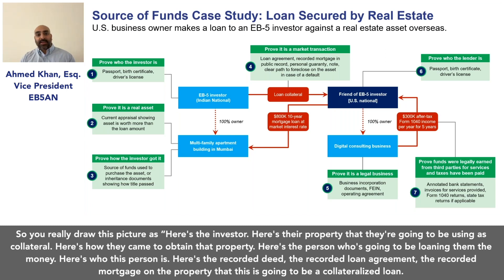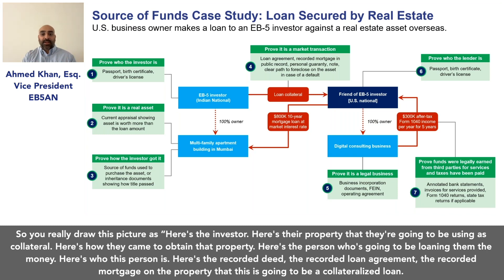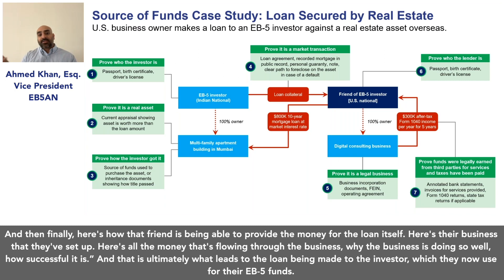You draw the full picture: here's the investor, here's the property they're using as collateral, here's how they obtained that property. Here's the person loaning them the money, here's the recorded deed, the recorded loan agreement, and the recorded mortgage. Finally, here's how the friend is able to provide the loan — the business they've set up, the money flowing through it, and why it's successful — which ultimately leads to the loan being made to the investor for their EB-5 funds.